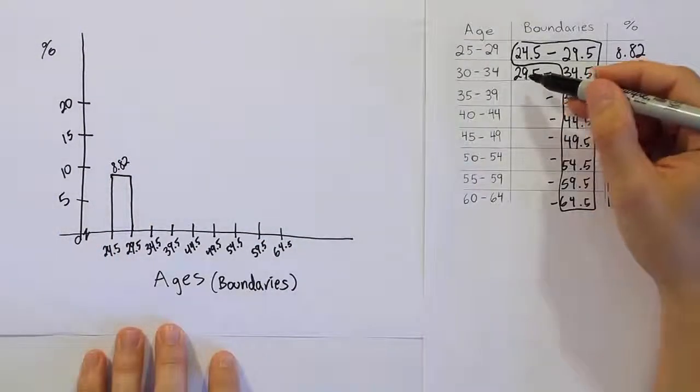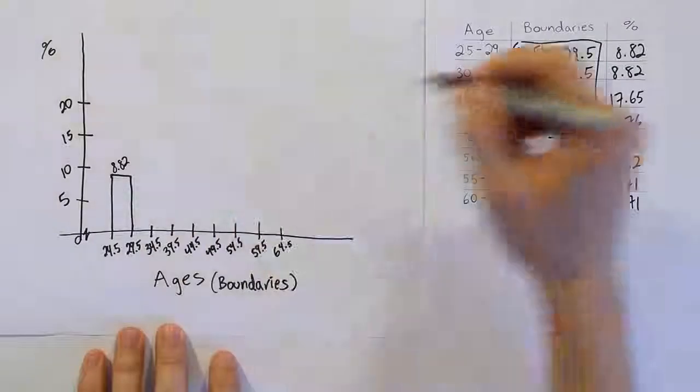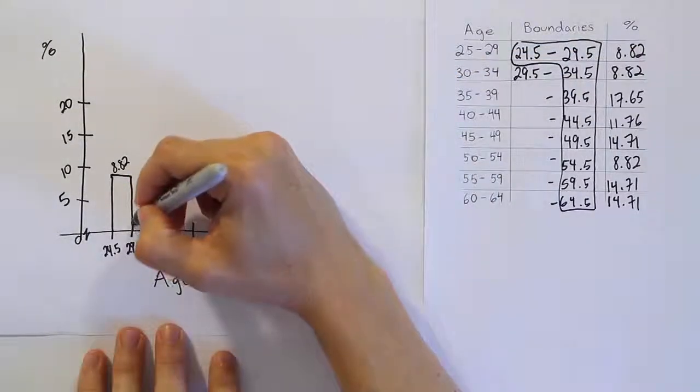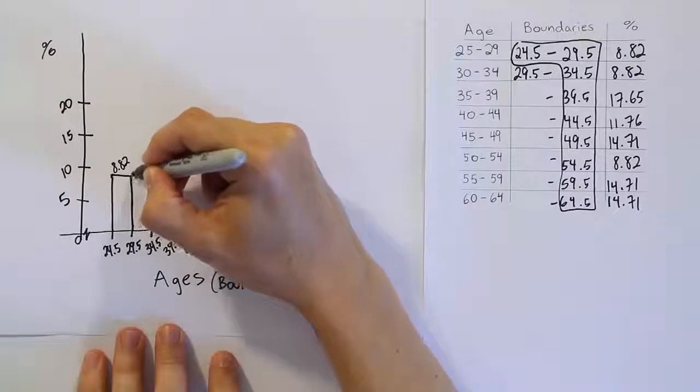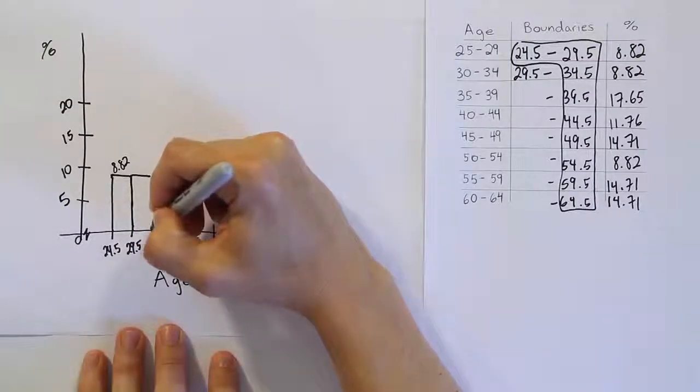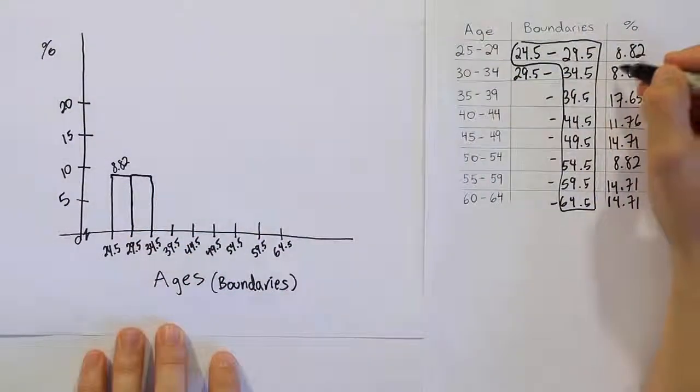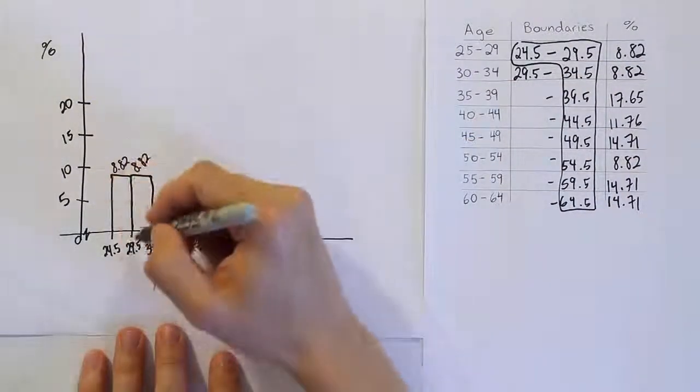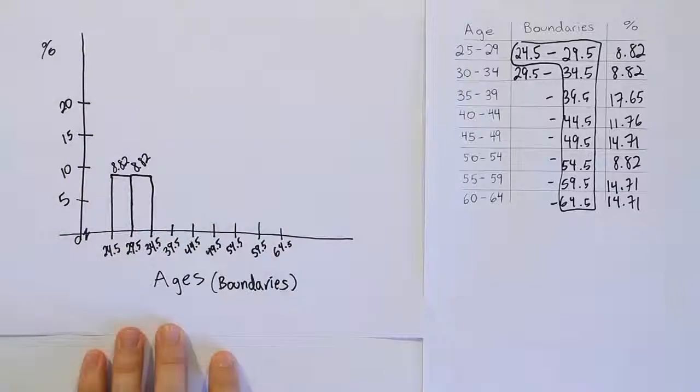The next rectangle actually starts at the same place the other one ended. So at 29.5 to 34.5, we're going to take this and go here, and then come over and go to there. Since it's the same height, I drew it at the same height, 8.82. Every rectangle will share a side with another rectangle, and then you repeat that process.